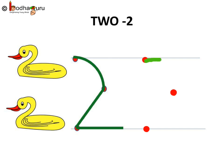First, make a curve, the backward one, then a slanting line, and finally a sleeping line.